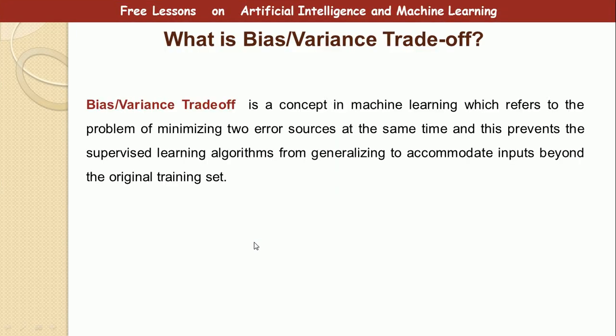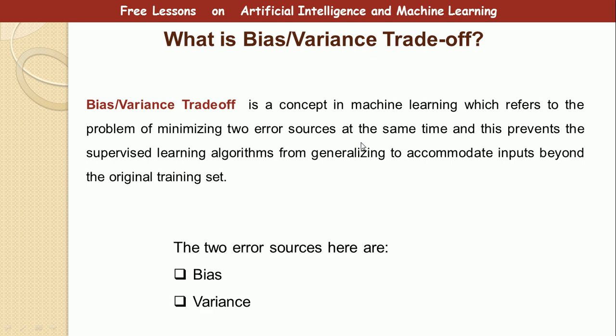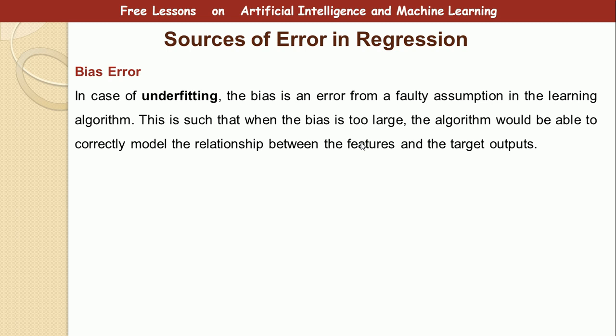So what is bias-variance trade-off? Bias-variance trade-off is a concept in machine learning which refers to the problem of minimizing two error sources at the same time, and this prevents the supervised learning algorithm from generalizing to accommodate inputs beyond the original dataset. These two errors are the bias error and the variance error — we want to minimize them at the same time.